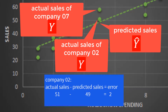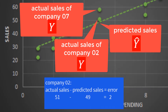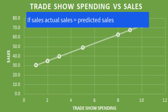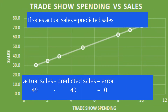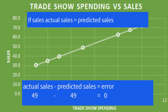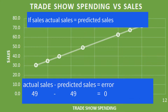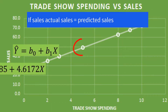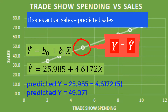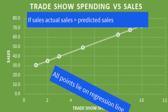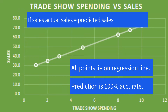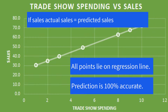That's the reason why company 02's point is almost lying on the regression line. If either of these two companies happened to have sales of 49 — the same as the prediction — meaning there is no error in prediction, then its point would lie exactly on the regression line.